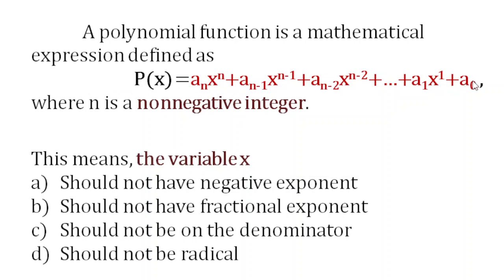Don't panic if you see this notation here, because a sub n is the coefficient of our leading term. Then a sub n minus 1 is the coefficient of our second term, a sub n minus 2 is the coefficient of our third term, and so on. And a sub 0 represents our constant. The exponent also goes from the highest exponent n, then the next exponent is n minus 1 — one degree lower — then the next exponent is n minus 2, and so on.